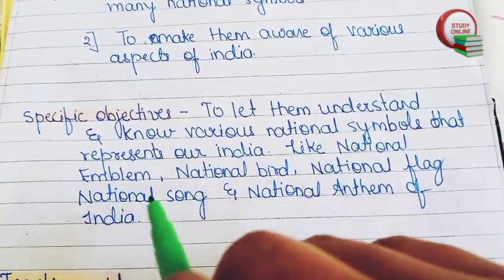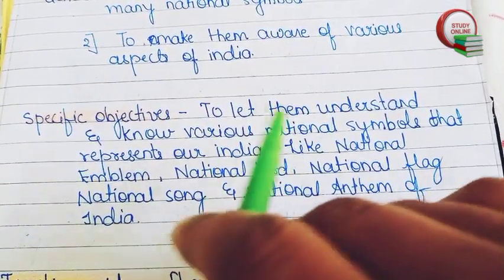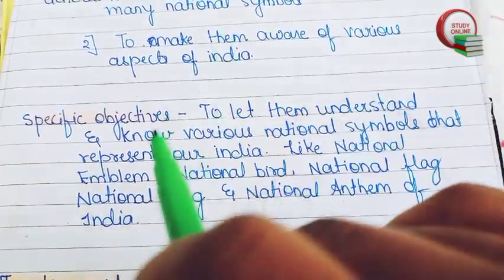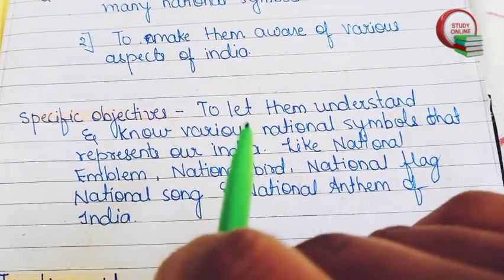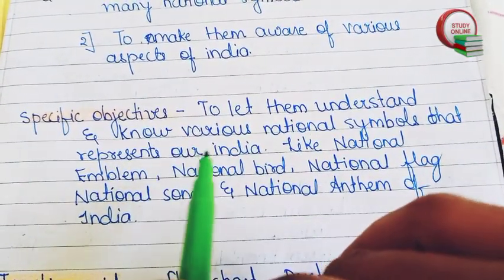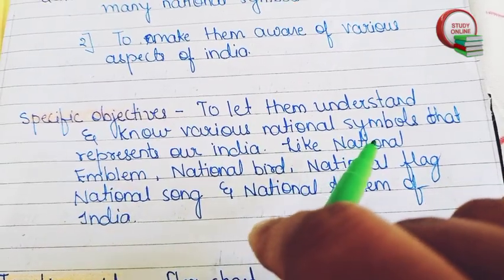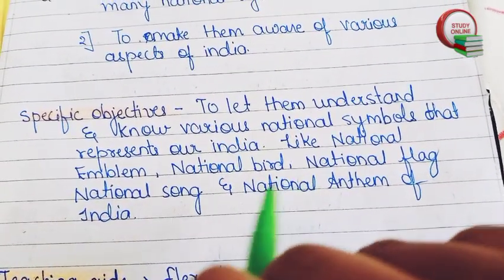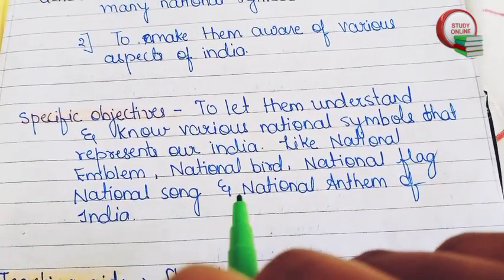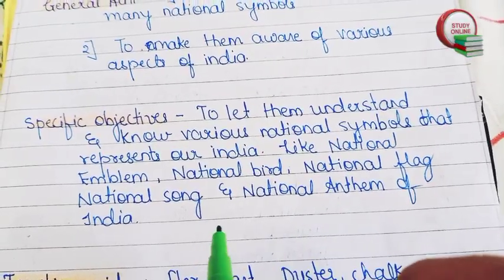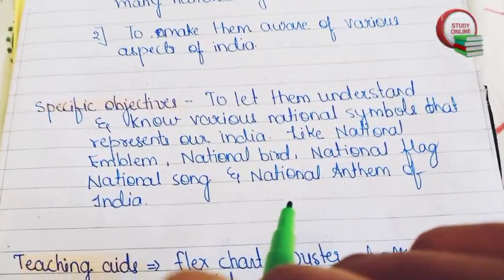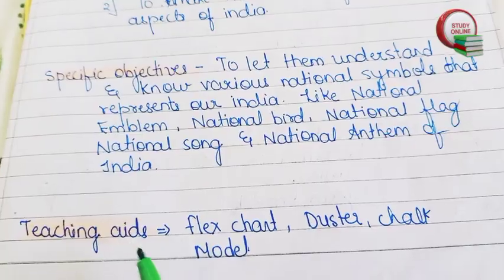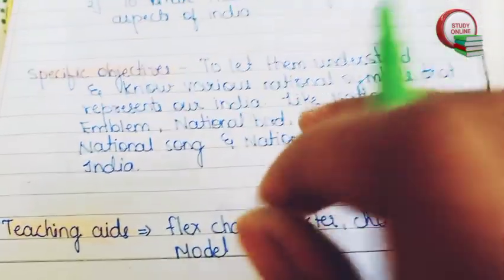Here you can see the Specific Objectives. We have to write what we want to teach students. The objective is to let them understand and know various national symbols that represent India — like the national emblem, national bird, national flag, national song, and national anthem of India.